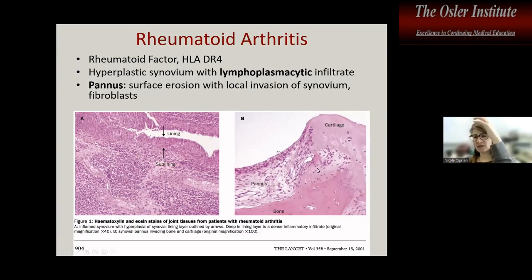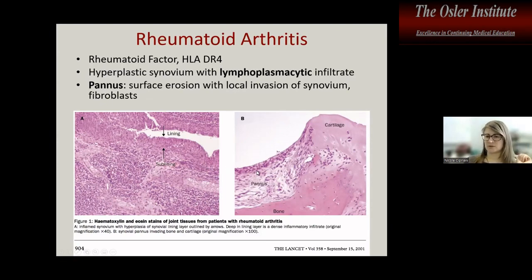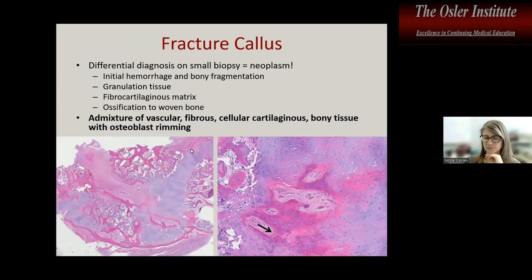Rheumatoid arthritis is proliferation of synovium and inflammatory cells over the surface of the articular joint, called a pannus. It is often rich in lymphocytes and plasma cells. In the soft tissue lecture we'll see peripheral rheumatoid nodules.